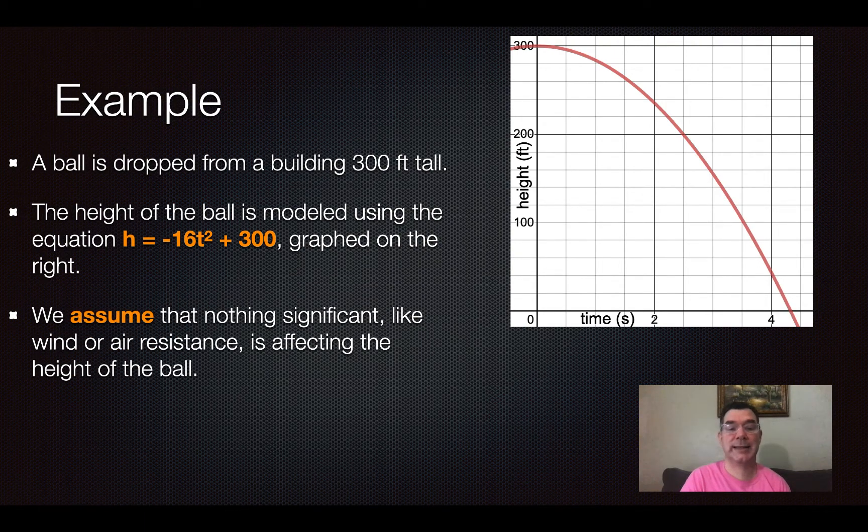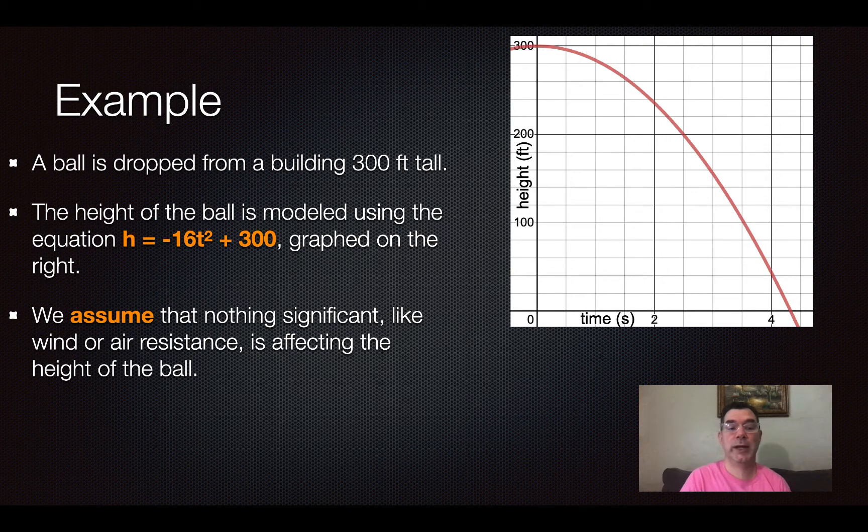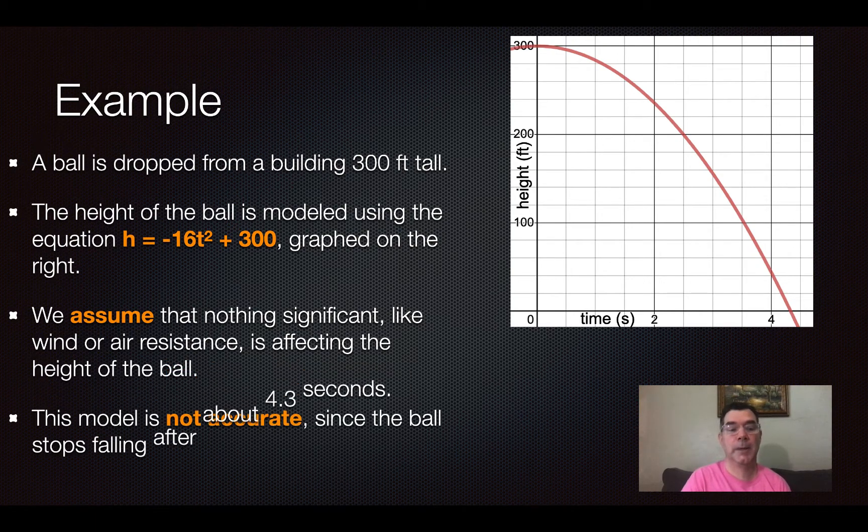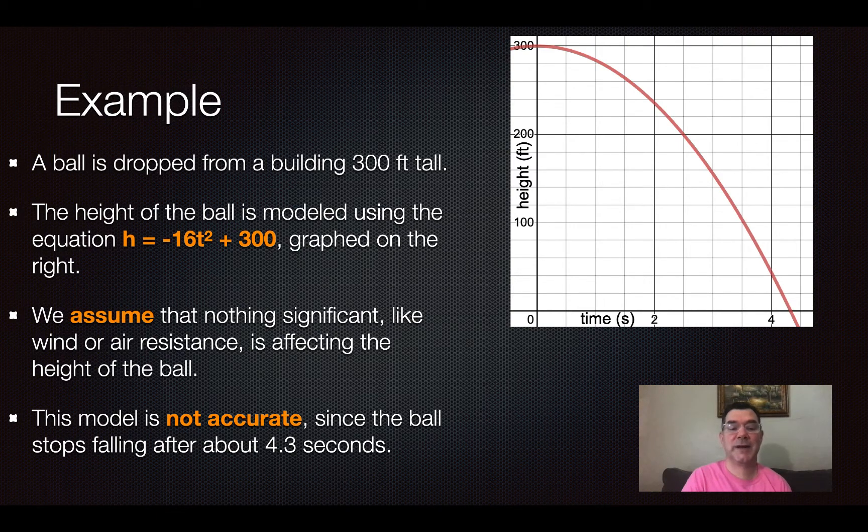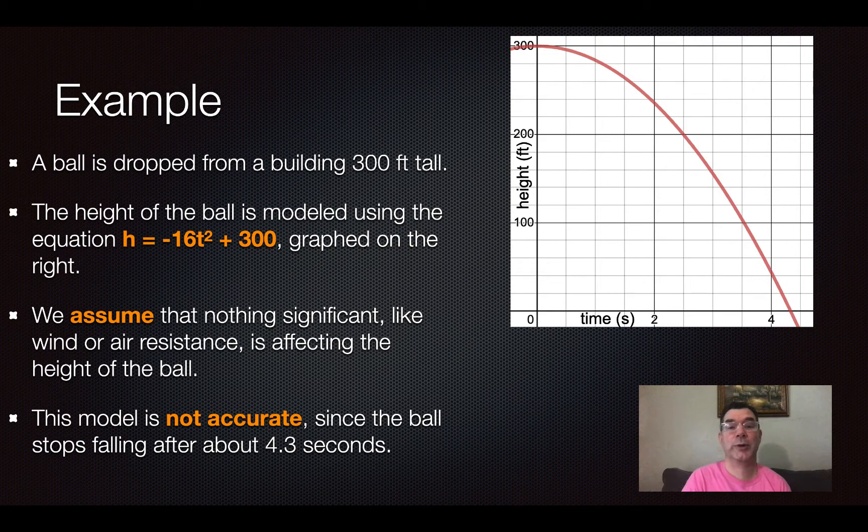So we make some assumptions that there is nothing significant like wind or air resistance or other obstacles that's affecting the height of the ball. But this model is found to be not accurate because the ball actually stops falling after 4.3 seconds.